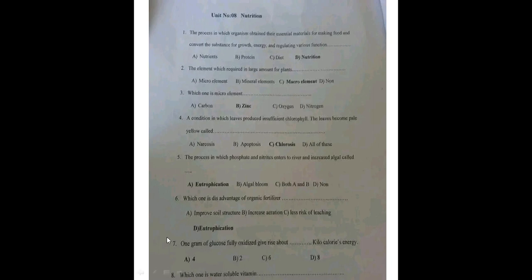The elements required in large amounts are called macro elements. Elements required in small amounts are called micro elements. Which one is a micro element? Carbon is not a micro element — zinc is the answer, because zinc is a mineral required in very small or minute amounts in the body.